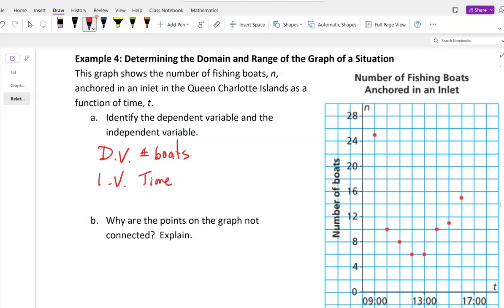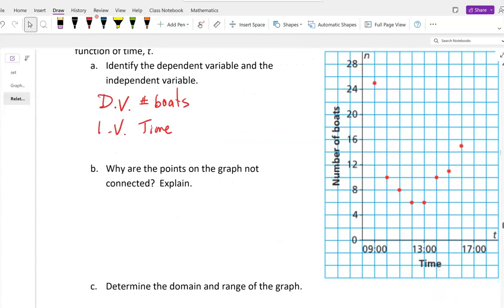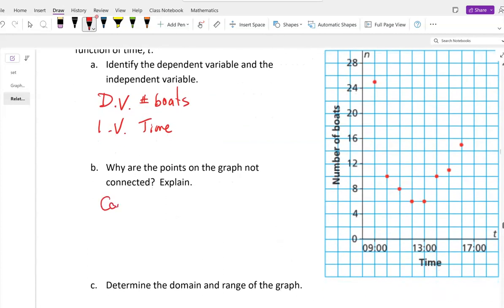Why are the points on the graph not connected? I think the easiest thing to say here is, cannot have half a boat. The data is discrete. I guess we could say the data are discrete, because data is plural, but it just sounds weird. So we'll leave it as is discrete.